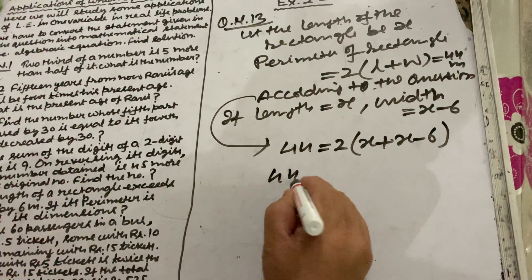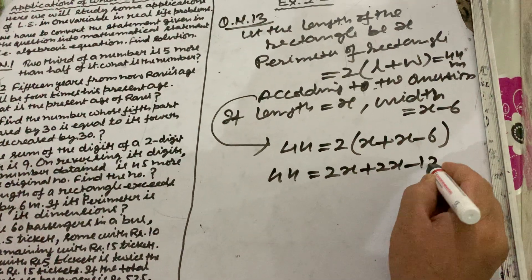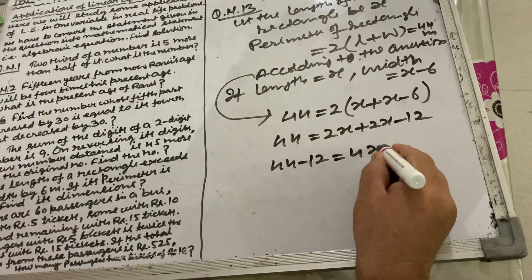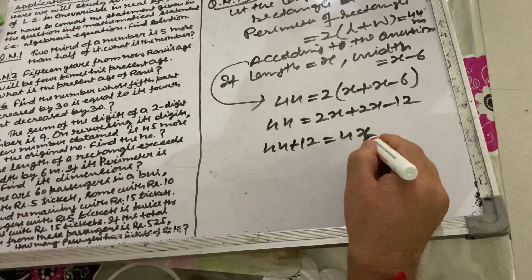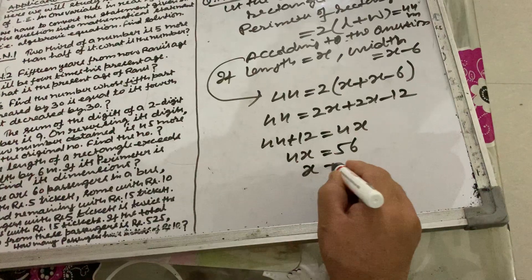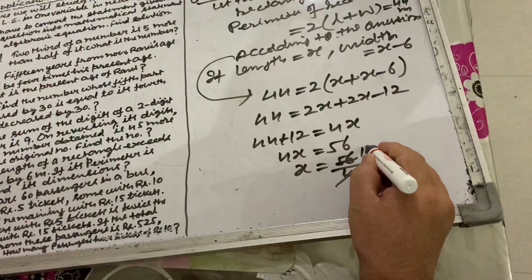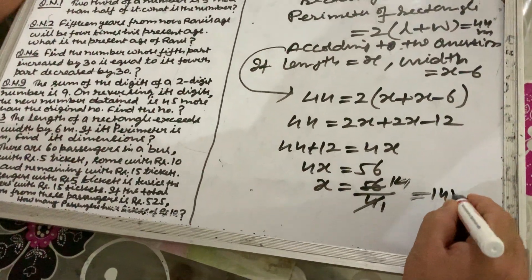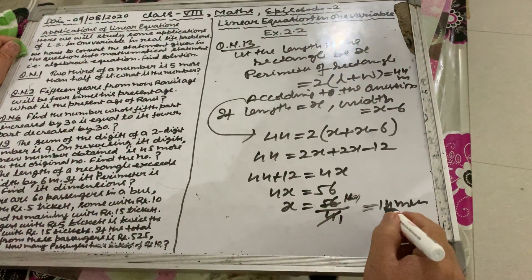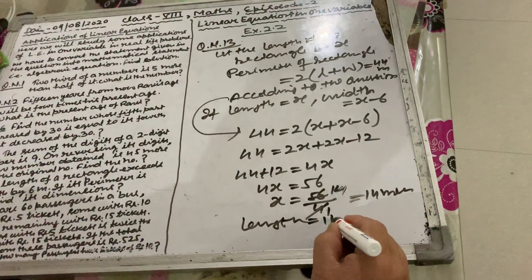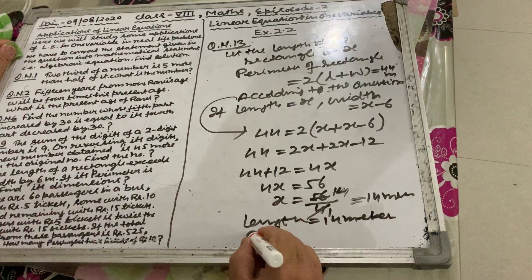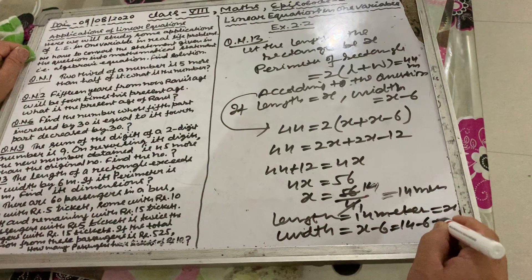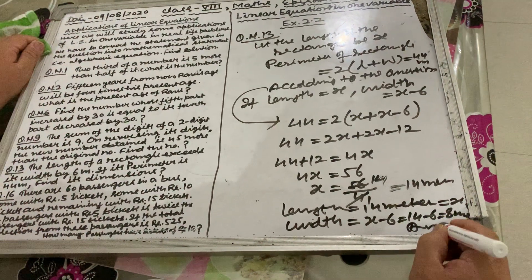So 44 equals 2 times (x plus x minus 6), which gives 44 equals 2x plus 2x minus 12, that is 44 equals 4x minus 12. Therefore 44 plus 12 equals 4x, so 4x equals 56 and x equals 56 divided by 4, which equals 14 meters. So length equals 14 meters and width equals x minus 6, that is 14 minus 6 equals 8 meters. This is the answer.